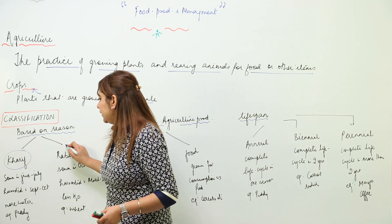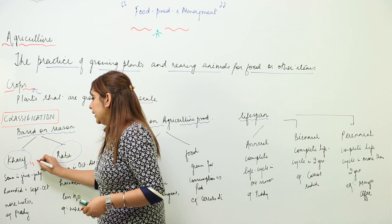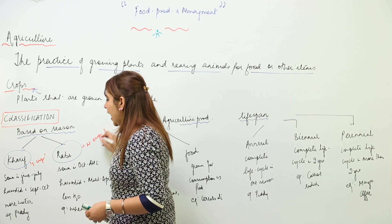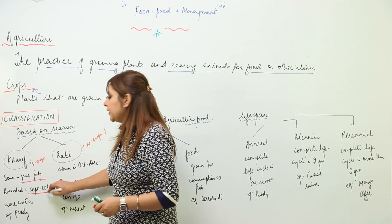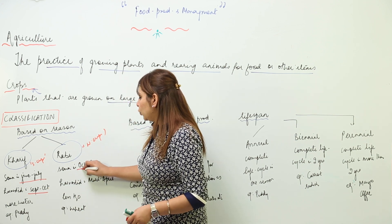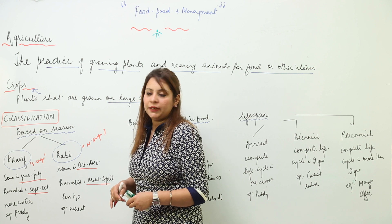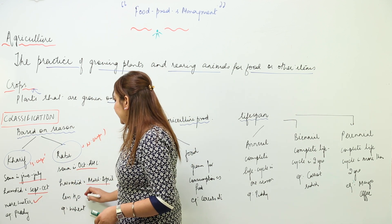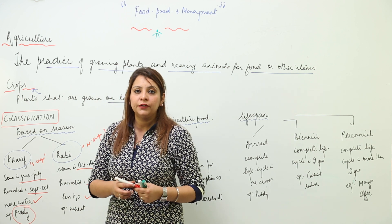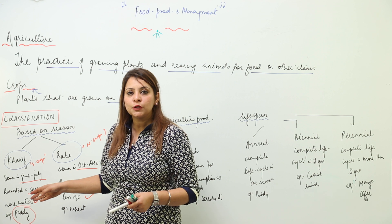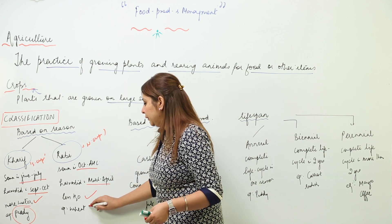Kharif crops are called summer crops and rabi crops are called winter crops. Kharif crops are sown in June–July during hot weather and harvested in September–October. Rabi crops are sown in October–December during winter and harvested in March–April. Kharif crops require more water while rabi crops require comparatively less water. For example, paddy is a kharif crop needing much water, and wheat is a rabi crop needing less water.